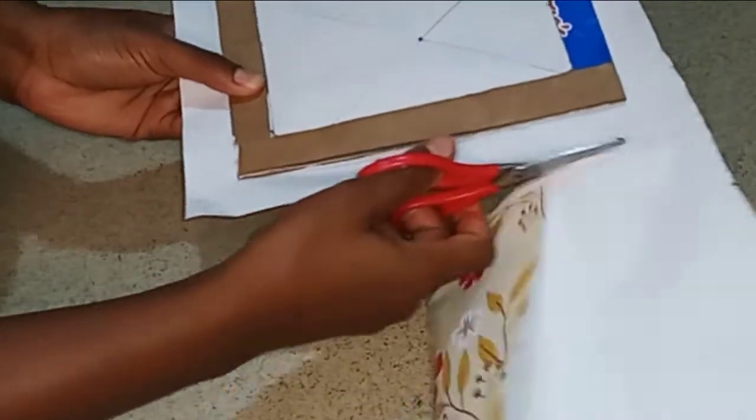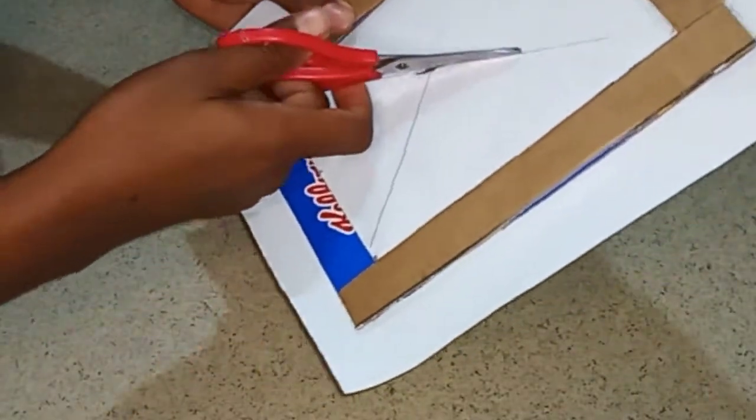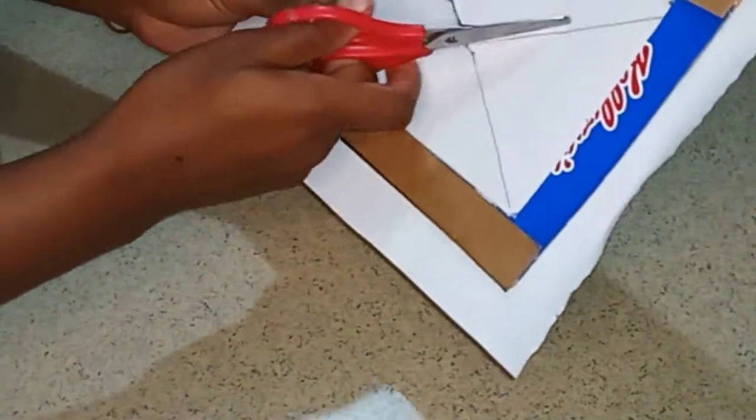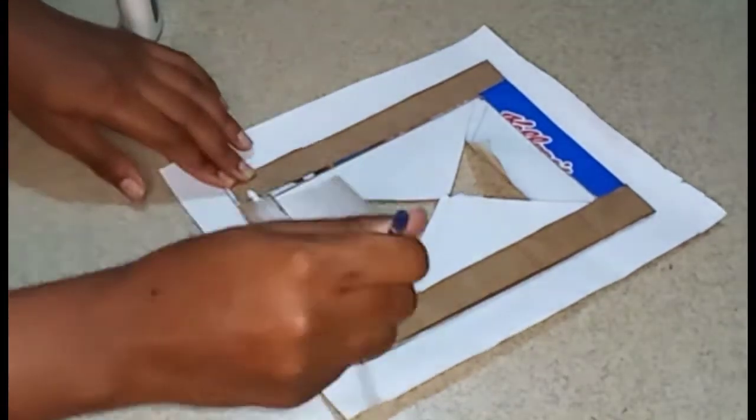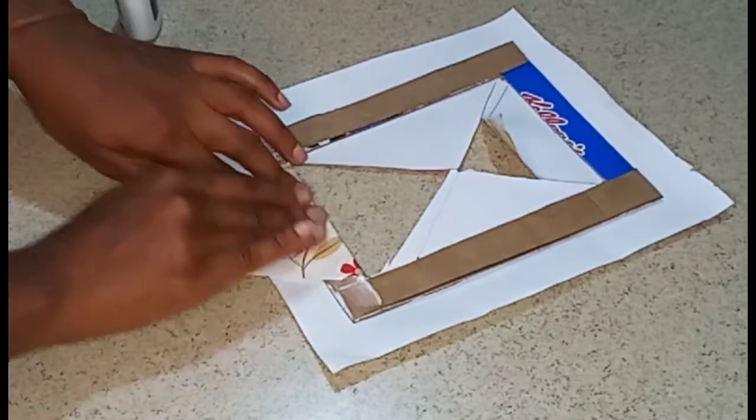Now going in with my scissors and I'm just cutting off the excess wrapping paper. I'm also going into the center of my frame and I'm just cutting some small triangles going all the way around. This is just to ensure that my frame is wrapped neatly.